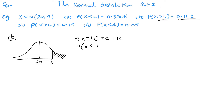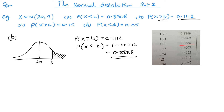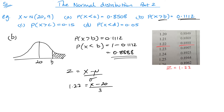P(X > b) = 0.1112, so P(X < b) = 1 − 0.1112 = 0.8888. Looking up 0.8888 in the tables gives z = 1.22. Using z = (x − mean) / standard deviation: 1.22 = (x − 20) / 3, so multiply by 3 and add 20, giving x = 23.66.